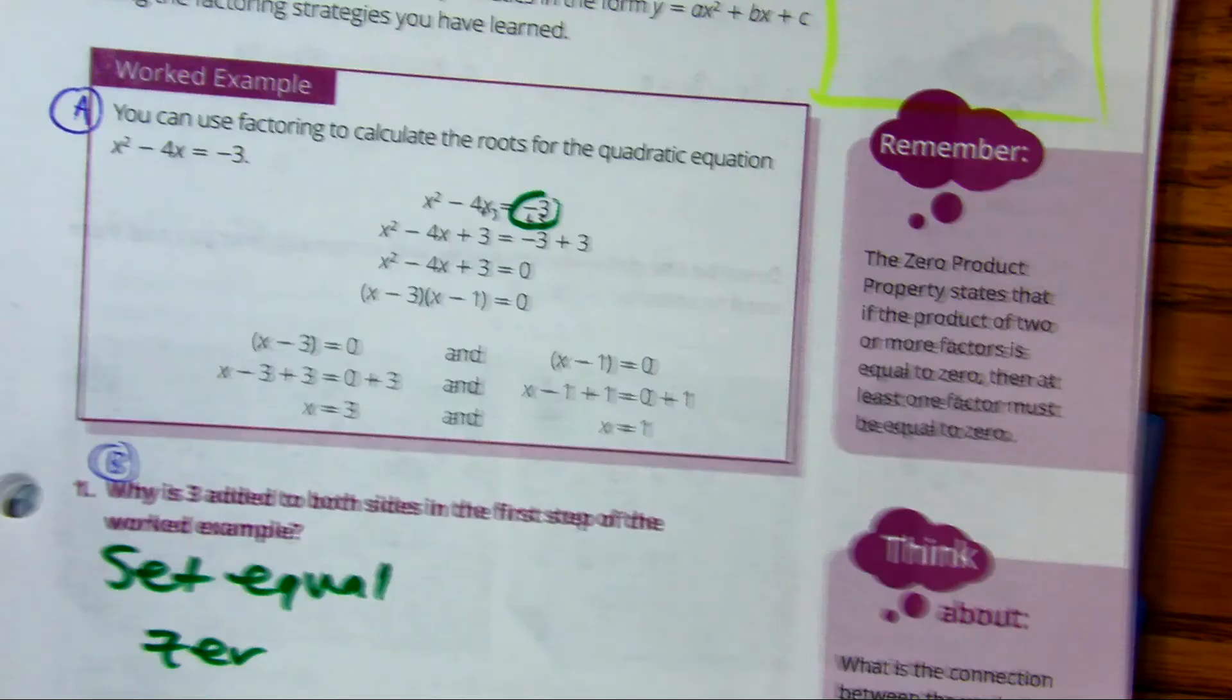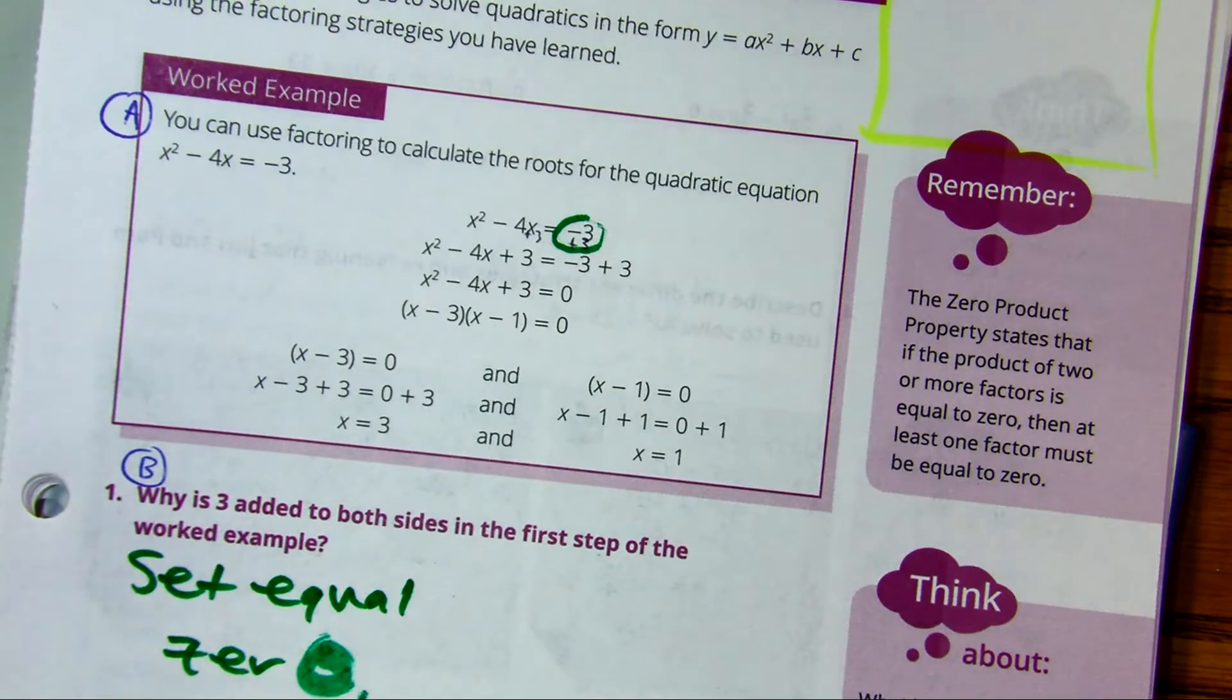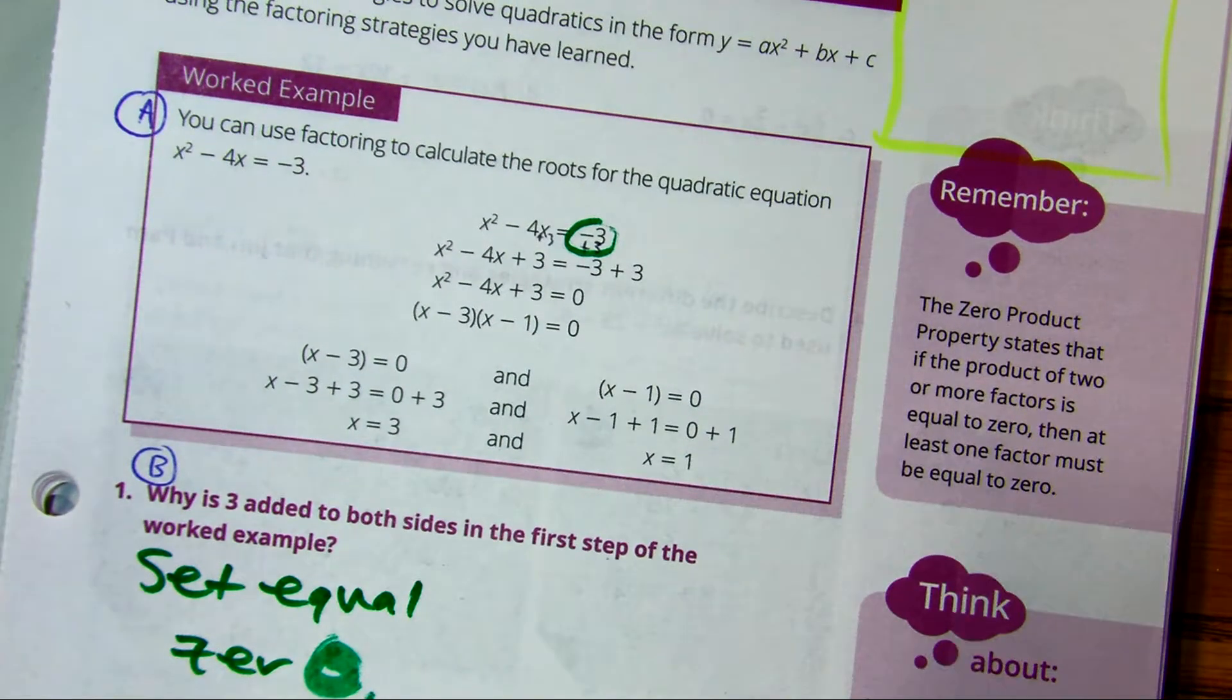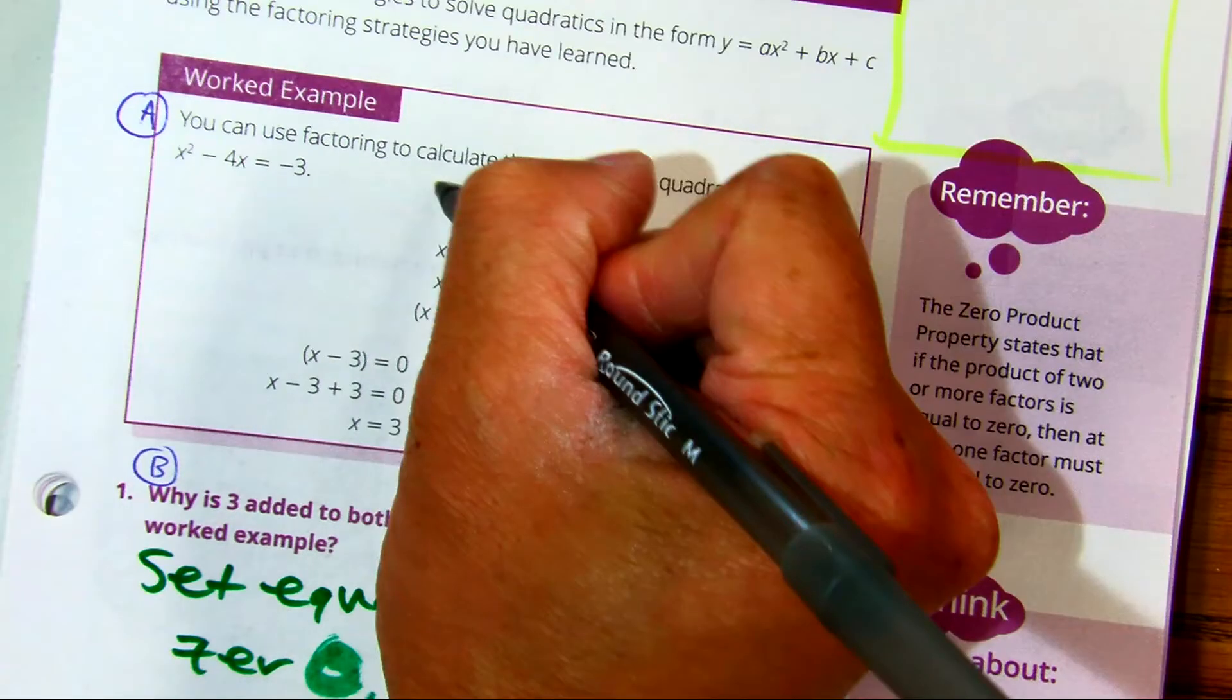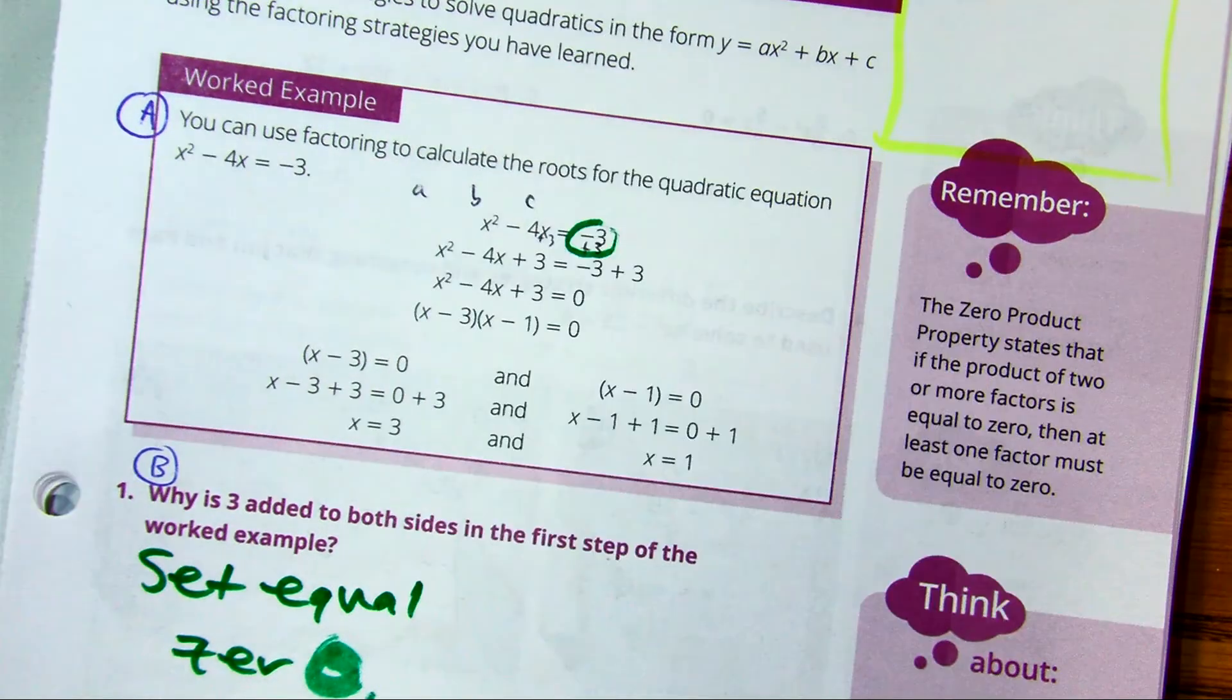Essentially, why they have to do that is in order to factor, right? We use Xbox. You have to have standard form. You have to have, if possible, A, B, and your C value. Does that make sense? Yes.